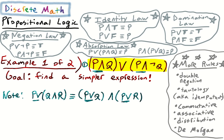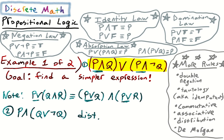So this is line one. For line two, we can factor out that 'p and', so to speak: p and (q or not q), by distribution. We have this q or not q, which is necessarily true — and that is the negation law.